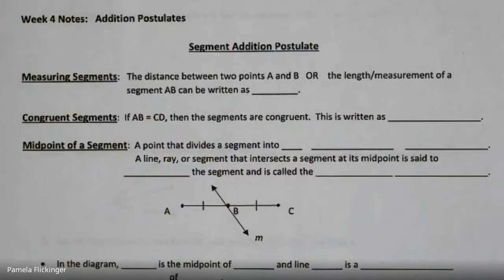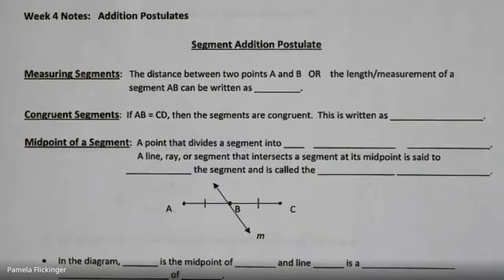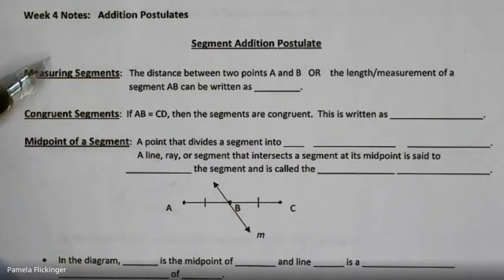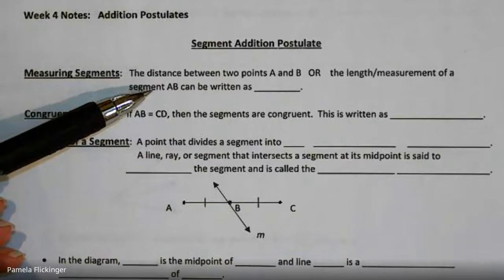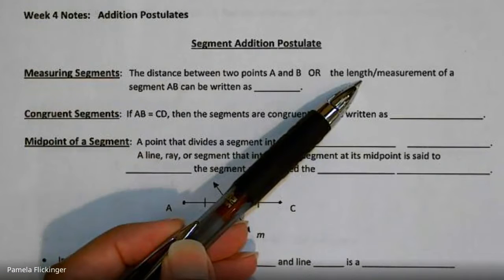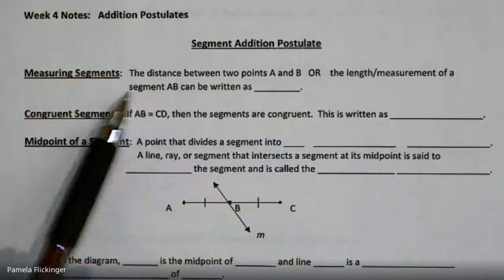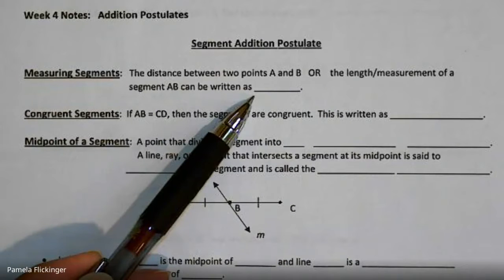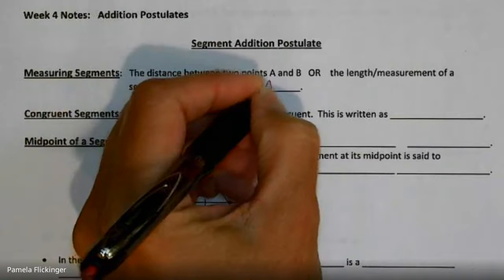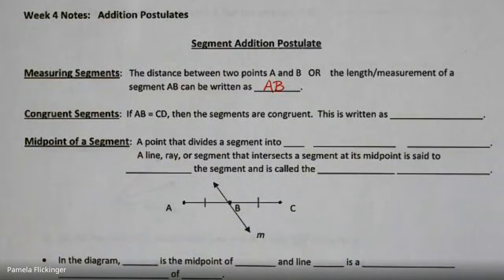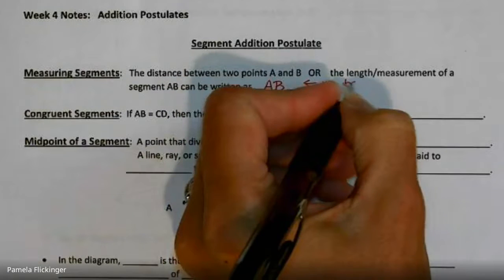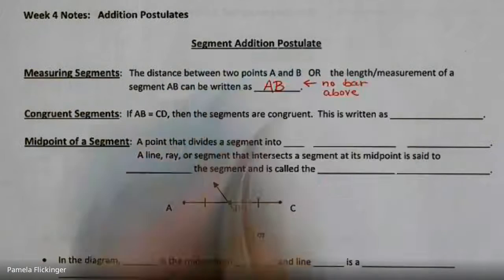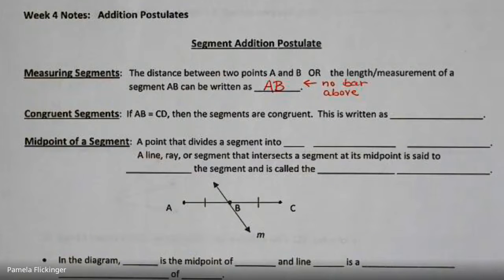Let's review a couple of things — first of all, just measuring segments. The distance between two points A and B is one way to be asked to find the length of a segment, or to measure a segment. You might see it asked as finding the length or the measurement of segment AB. When you want the measurement of a segment, you name the segment by putting the two points together but you do not put a bar above it — no bar means measurement.